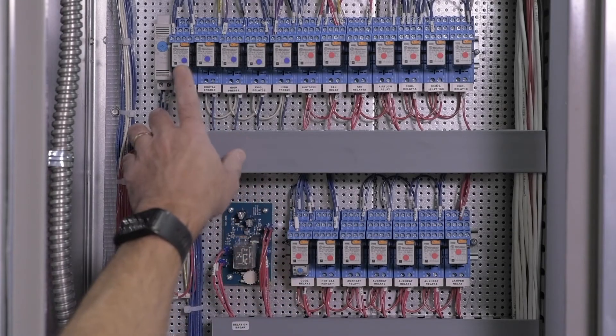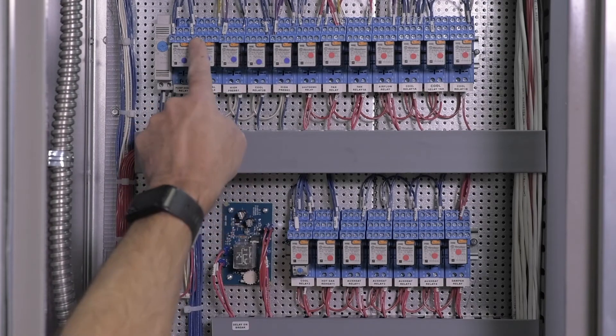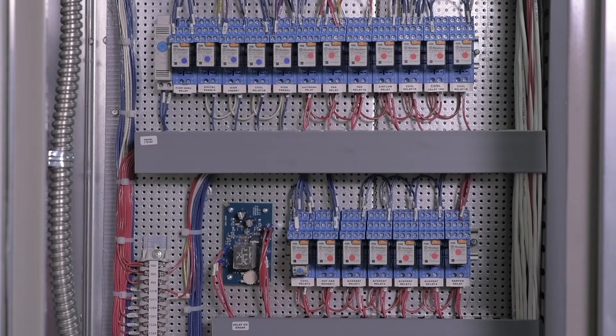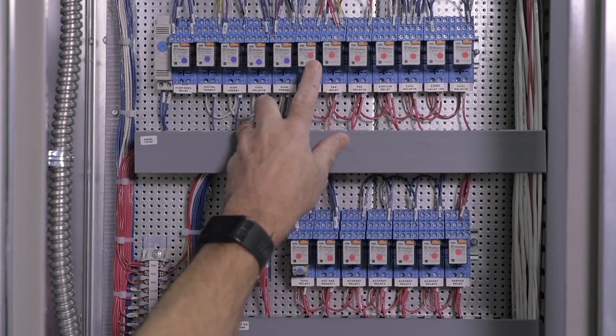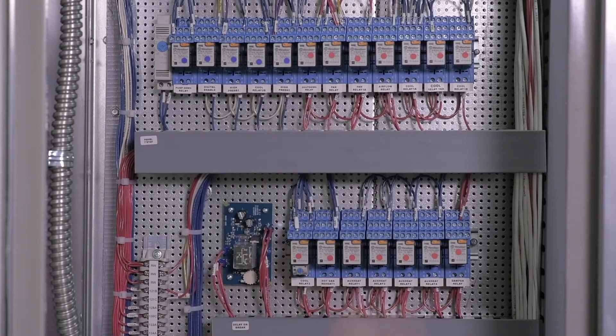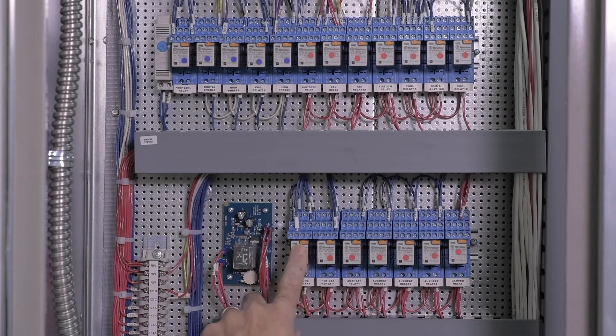These are relays we use at Seasons 4. The blue dots and the blue wire indicate 120 volts. The red dots and the red wire indicate 24 volts AC. The relays have orange levered overrides at the top.